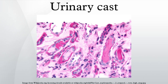Bacterial casts: given their appearance in pyelonephritis, these should be seen in association with loose bacteria, white blood cells, and white blood cell casts. Their discovery is likely rare, due to the infection-fighting efficiency of neutrophils and the possibility of misidentification as a fine granular cast.